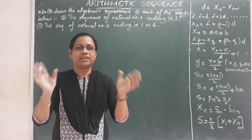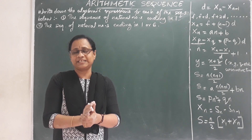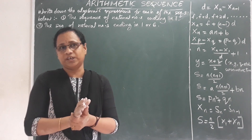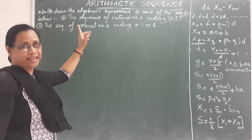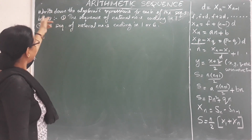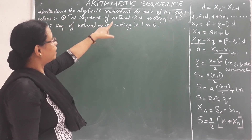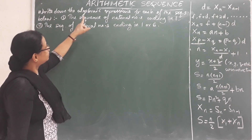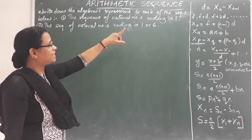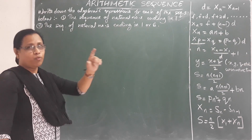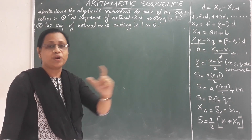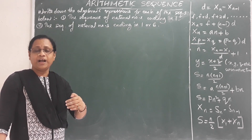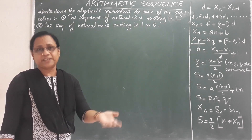The first thing is to read the textbook. We are going to revise this. First question: write down the algebraic expression for each of the sequences below. The first question is the sequence of natural numbers ending in one. We are going to revise that sequence — it is called the algebraic expression.